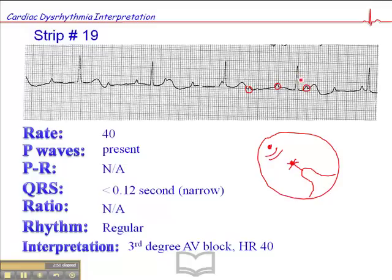In order for that QRS to be narrow, the only way the QRS can be narrow — if you recall — is if the impulse travels down both bundle branches simultaneously. Therefore, the focus giving rise to these narrow QRS complexes has to be coming from above the bifurcation of the bundle branches. Therefore, the focus must be somewhere in the bundle of His, so that it's traveling down both bundle branches simultaneously. That's how we end up with a narrow complex third-degree AV block.